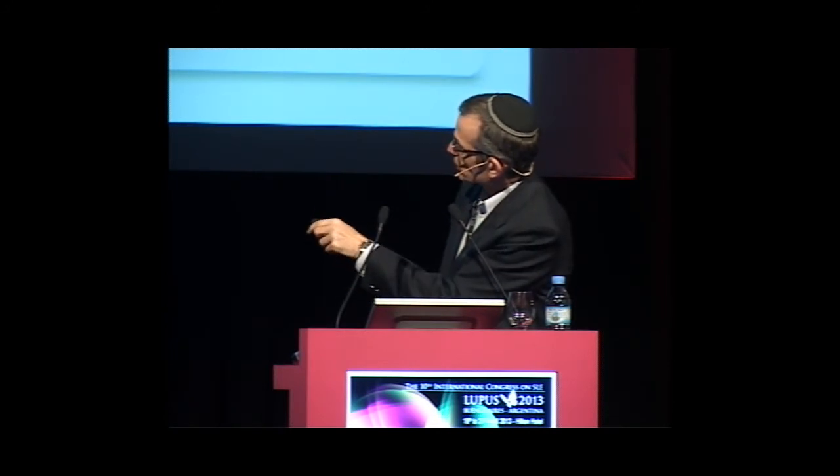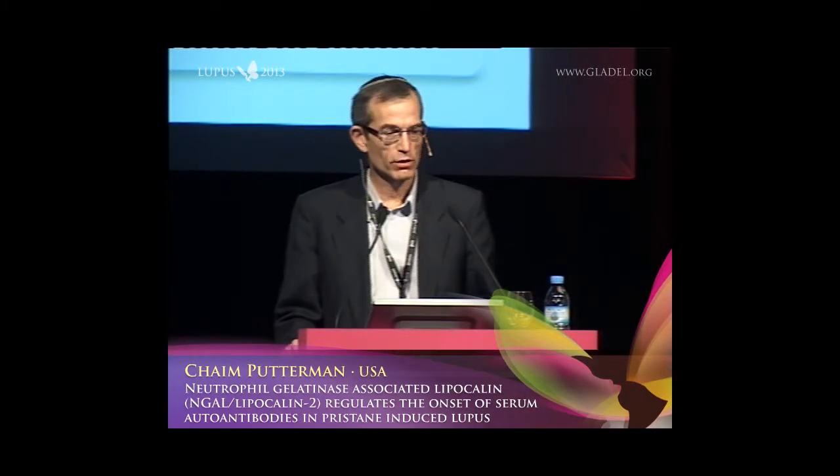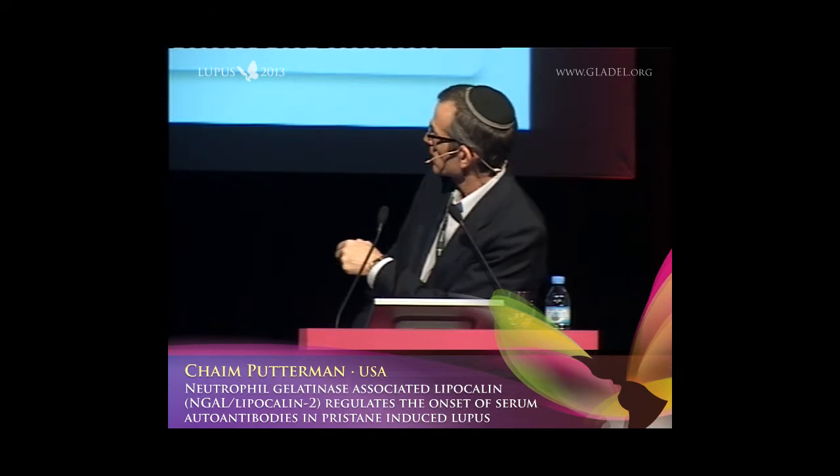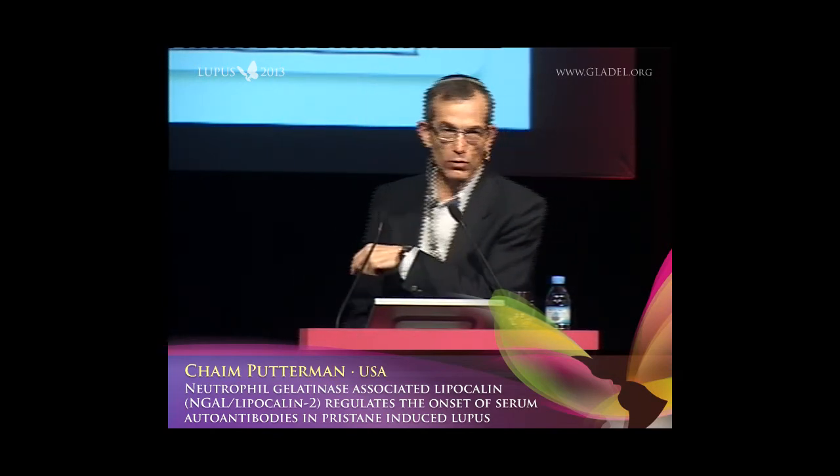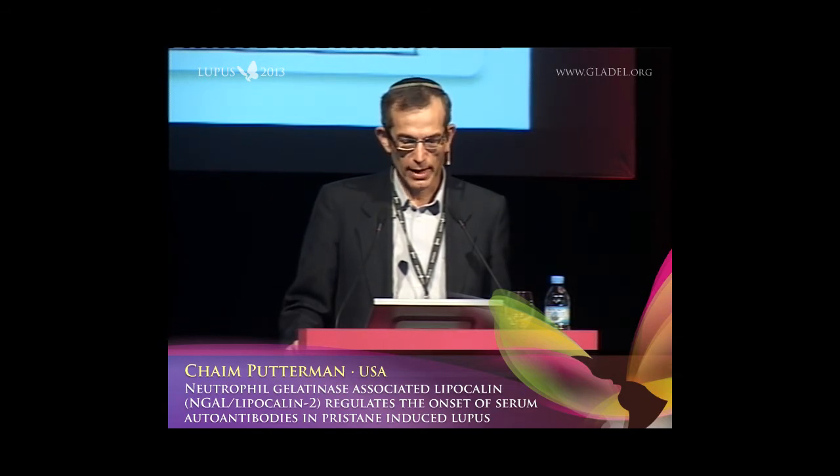One of the characteristics of the pristane-induced lupus model is generation of Sm-RNP antibodies. The B6 mice injected with pristane show some generation of anti-Sm/RNP antibodies, but this is greatly accelerated and exacerbated in the NGAL knockout mice. Looking at ANA, NGAL knockout mice do not have baseline autoimmunity. Pristane mice start to show some speckled pattern, and this is exacerbated in our NGAL knockout mice.